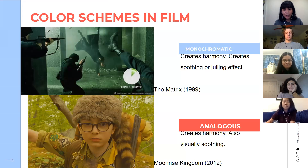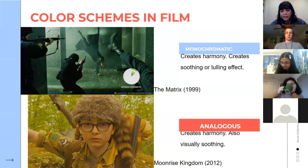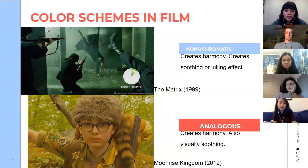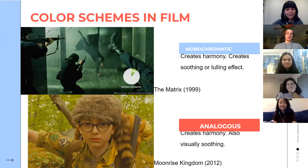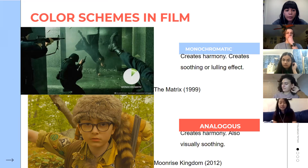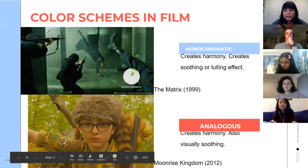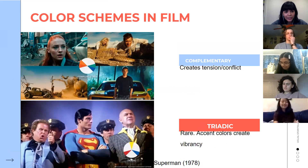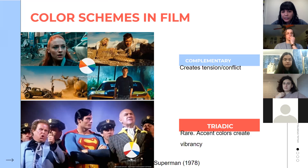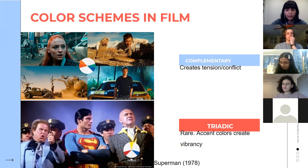Some popular color schemes in film: monochromatic means everything is the same color — like The Matrix, where everything is green, creating a visually harmonious, soothing effect that mirrors how people are asleep in the matrix. An analogous color scheme uses colors next to each other on the color wheel — like yellow, orange, green — which also creates harmony but adds more dimension. A complementary color scheme is probably the most used in film — colors directly opposite on the color wheel, like the orange and blue you see in many movies — creating tension and conflict because the warm and cool tones clash.